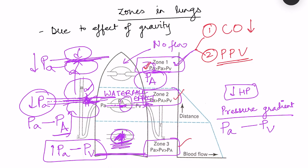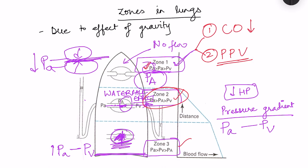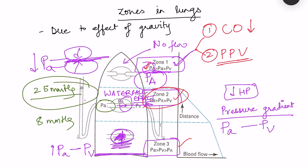In zone 2, the waterfall effect involves intermittent flow due to the difference between systole and diastole. During diastole, pulmonary arterial pressure is 8 mmHg, which may fall enough with height for vessels to be compressed. During systole, pressure is 25 mmHg — the higher systolic pressure is sufficient to push blood through. So while systolic pressure overcomes compression, diastolic pressure may not, creating the intermittent waterfall-like flow.